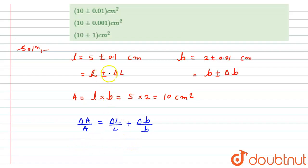That's why I will consider only the positive values. So here, the required delta A by A will be equals to delta l, that is 0.1 divided by 5, plus 0.01 divided by 2.